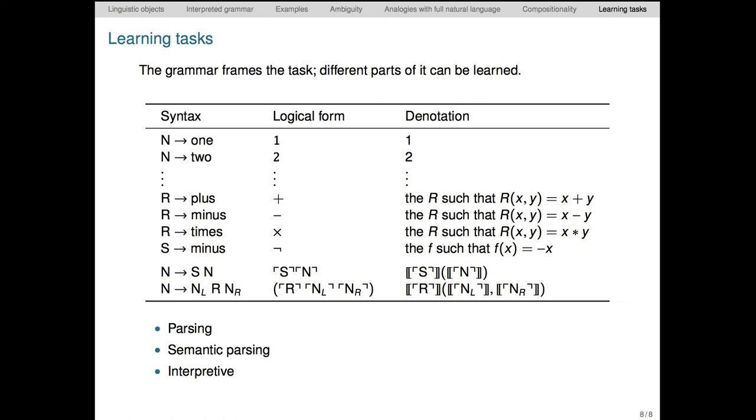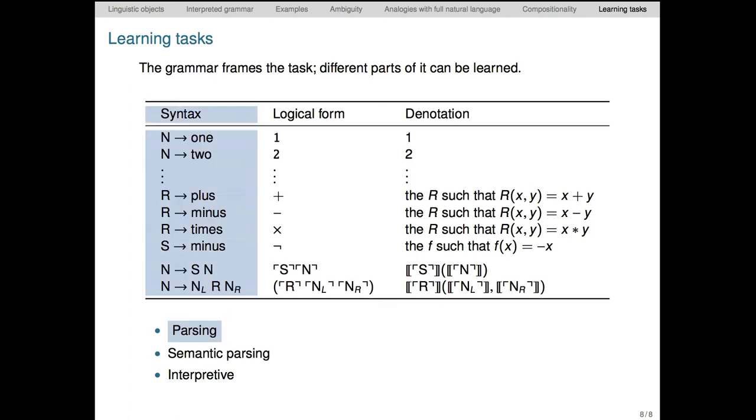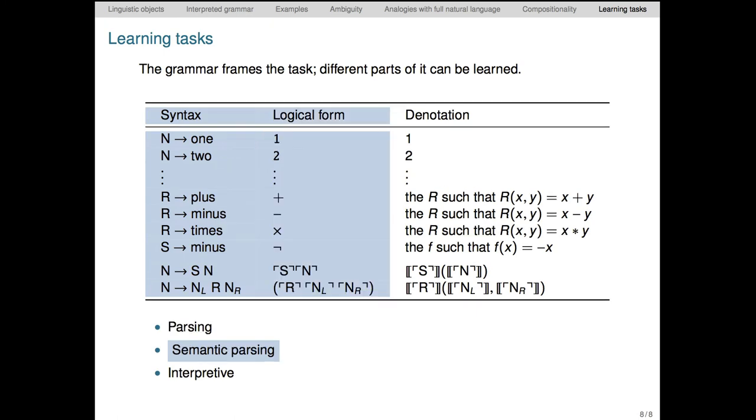Let's begin to make this learning task more precise. Here's the grammar we've been working with. What would it mean to learn it? Well, we can take a number of different perspectives. The goal of parsing is to learn how to map from strings to syntactic structures, so that neglects the semantic aspects of the problem given by logical forms and denotations. What's normally called semantic parsing is the task of going from utterances as strings, or from syntactic structures, to logical forms, which are another kind of syntactic object. The denotations then take care of themselves. We execute the logical form to obtain them.